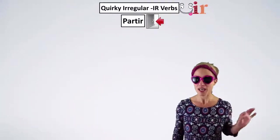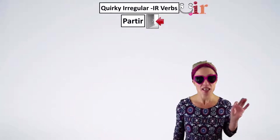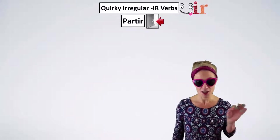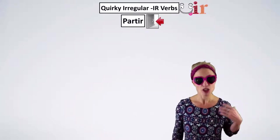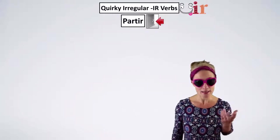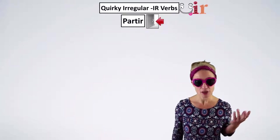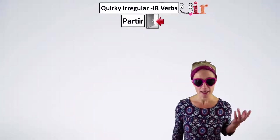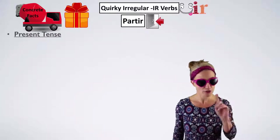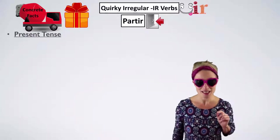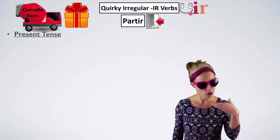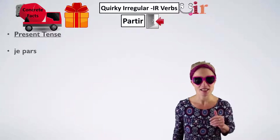We are looking at the quirky irregular IR verbs. We're going to use 'partir' as our example — to leave, to go away. Let's first of all look at it in the present indicative, the normal present tense.